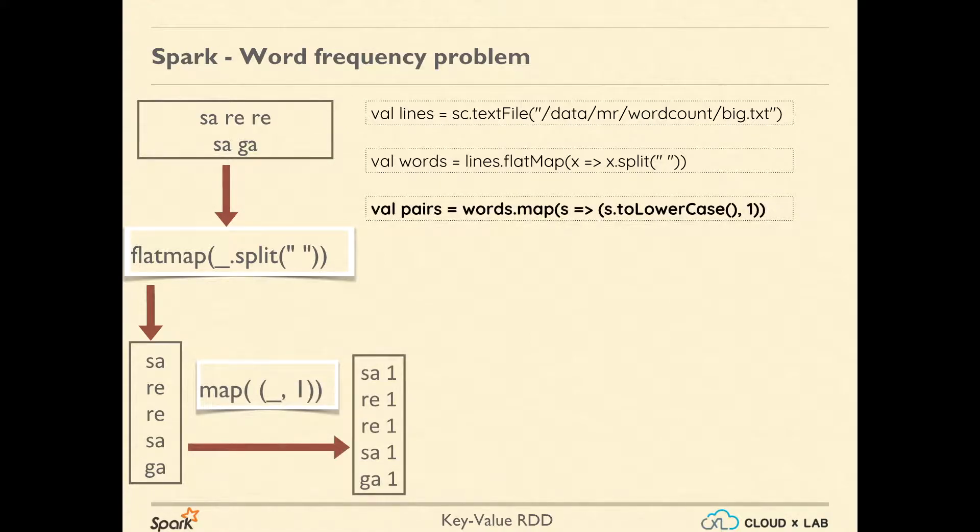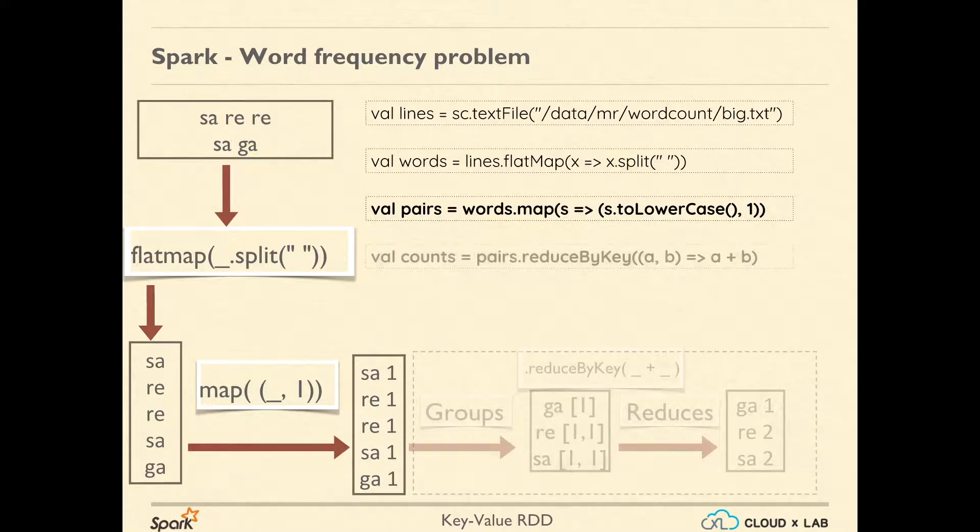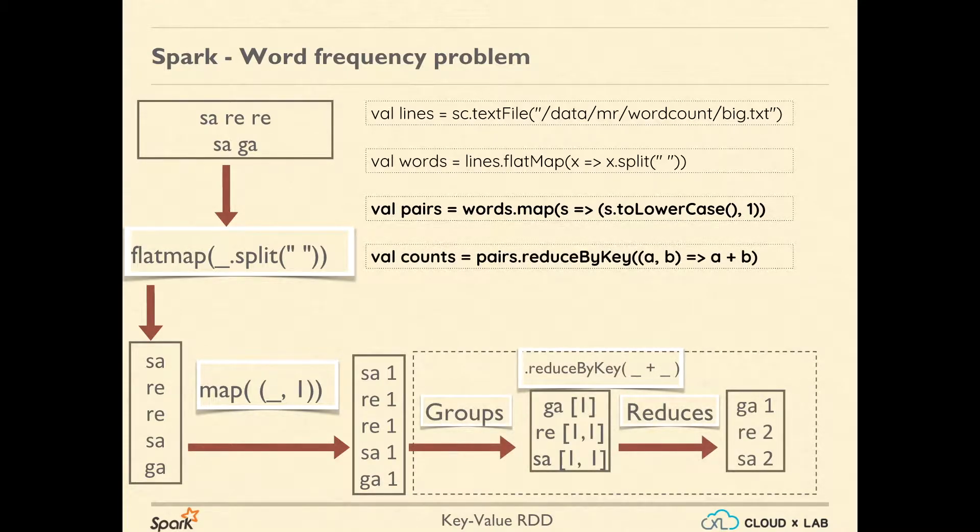Next, using map, we convert each word into a tuple so that we can use reduceByKey. In this tuple, the first element is the word and the second is numeric one. Now we are ready to call reduceByKey with the reduce function, which is simply summing two values passed as argument.